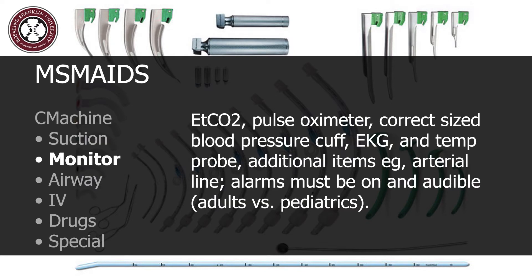Monitor refers to all standard monitoring equipment, including the pulse oximeter, a properly sized blood pressure cuff, EKG, end-tidal CO2, and temp probe, as well as any additional items needed for advanced monitoring, such as an arterial line. Everything must be set up and ready for use. Alarms must be on, audible, and properly set for the patient — for instance, pediatric versus adult settings.